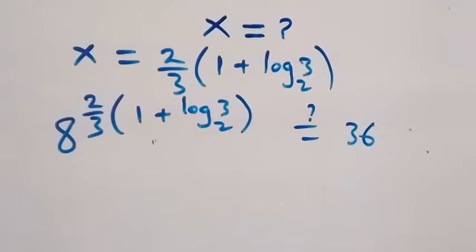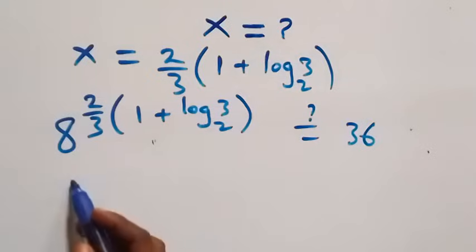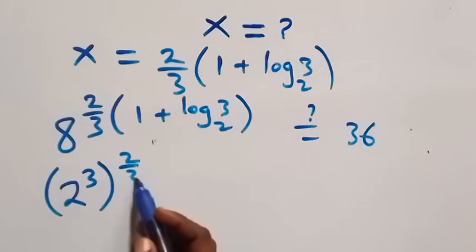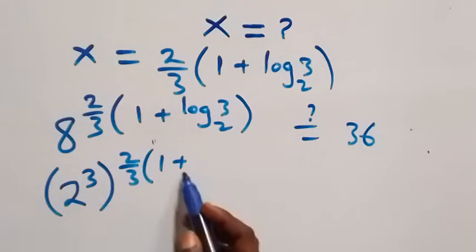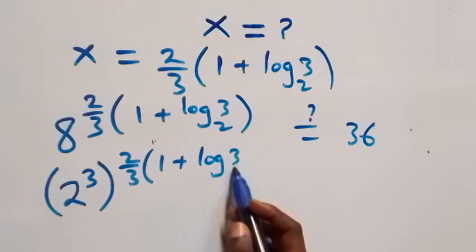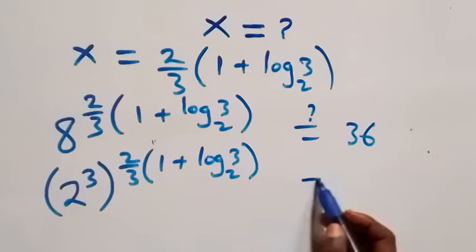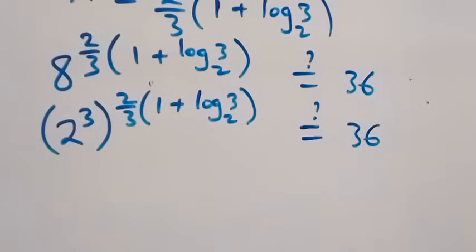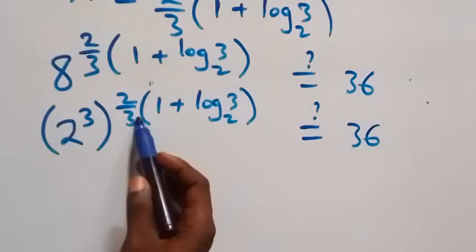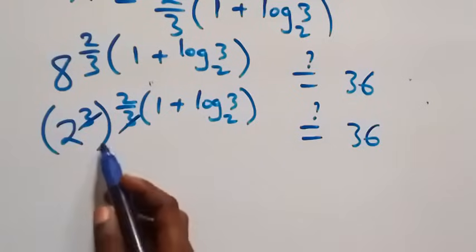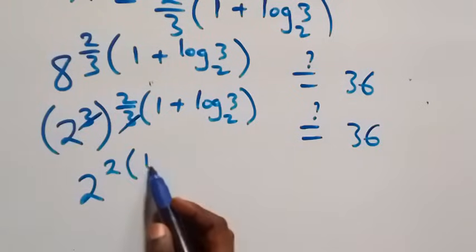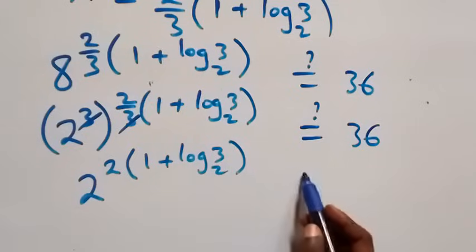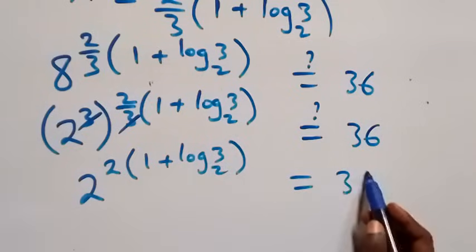We express 8 as 2 raised to power 3, then raised to power 2 over 3 times (1 plus log 3 base 2), equals 36. This simplifies to 2 raised to power 2 times (1 plus log 3 base 2), equals 36.